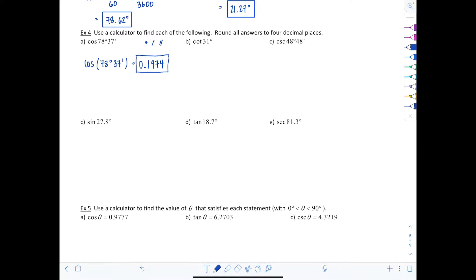What if your calculator doesn't have the option to give minutes? You could convert it on your own. Remember another option is taking 37 divided by 60, adding that to 78 degrees, and this comes out to 78.616 repeating degrees. Don't clear your calculator, you would just take cosine of that and you'll get the same thing.